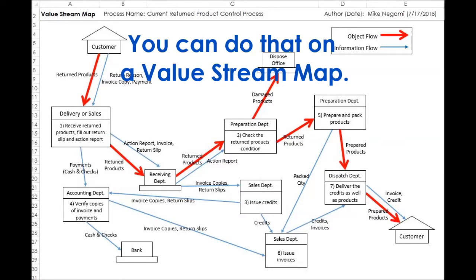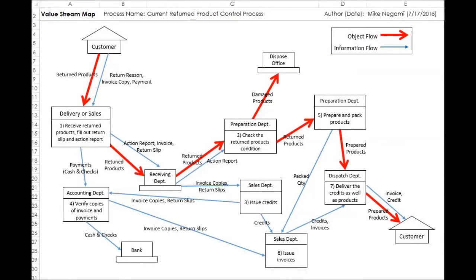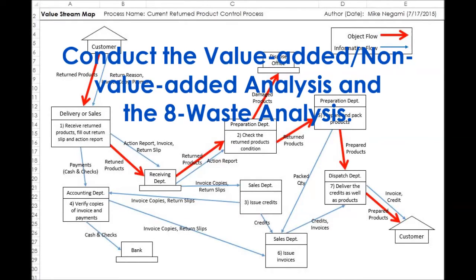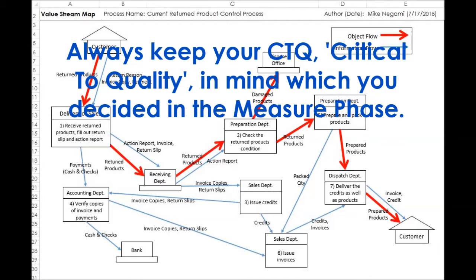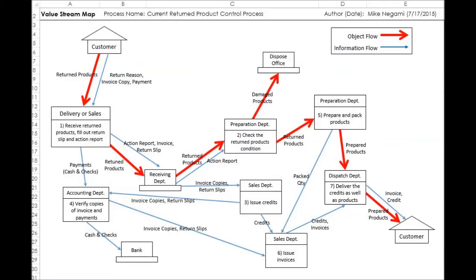Next, how can we do it practically? You can do that on a value stream map. After making a value stream map for your current target process, conduct the value-added, non-value-added analysis and the eight wastes analysis. During the analysis, always keep your CTQ, critical to quality, in mind, which you decided in the Measure Phase. I'll show you this exercise using an Excel template in the next video.